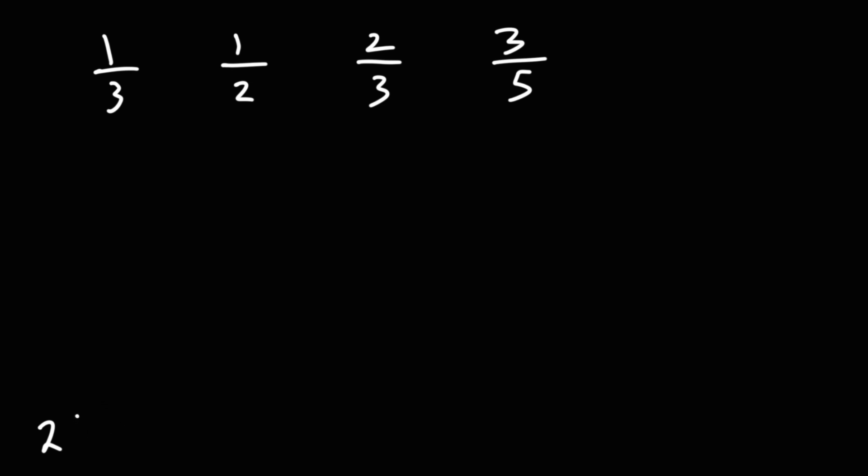So we're going to multiply 2, 3, and 5. Even though we have two 3s, we don't need to multiply twice. Just once will be enough. So 2, 3, and 5 will give us a common denominator. 2 times 3 is 6. 6 times 5 is 30. So we want to get a common denominator of 30.